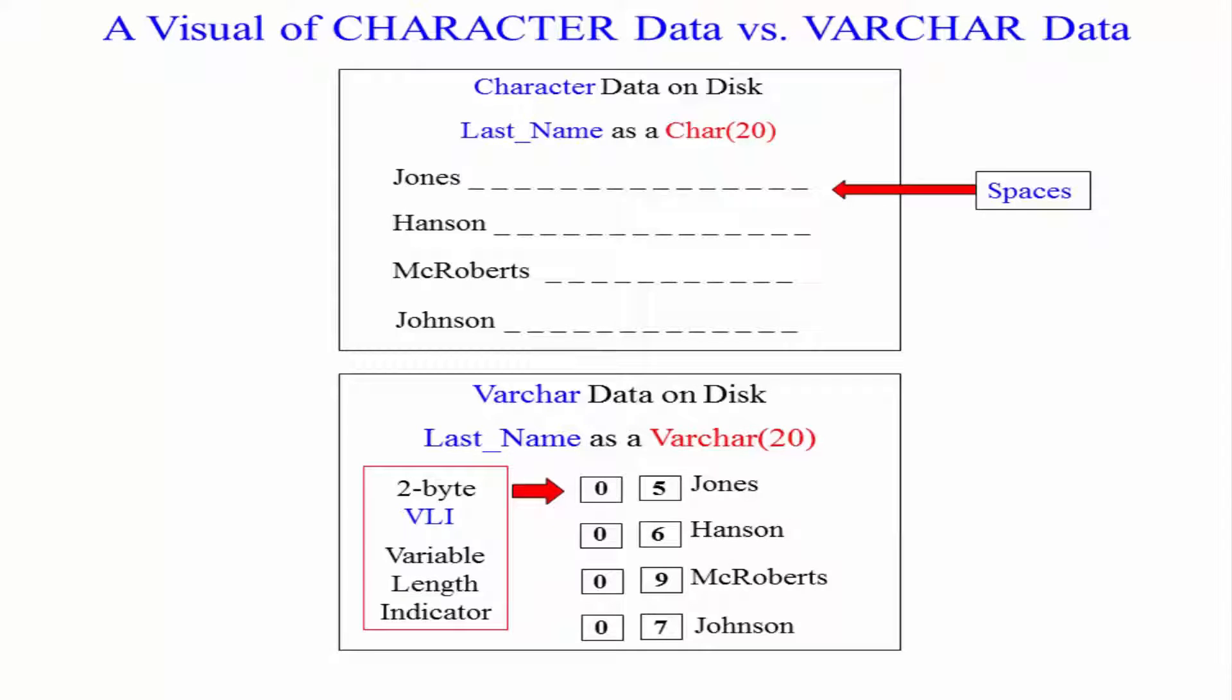Hanson has six characters in it and 14 spaces at the end because they're going to fill up the entire 20 characters on all character data.